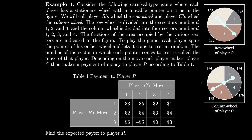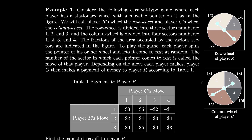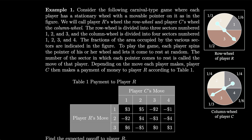As an example, let's consider the following carnival-type game where each player has a stationary wheel with a movable pointer on it, as in the figure. We call player R's wheel the row wheel and player C's wheel the column wheel. The row wheel is divided into three sectors numbered 1, 2, and 3, while the column wheel is divided into four sectors numbered 1, 2, 3, and 4. The fractions of the area occupied by the various sectors are indicated in the figure. To play the game, each player spins the pointer of his or her wheel and lets it come to rest at random, and the number of the sector where the pointer lands is called the move of that player.